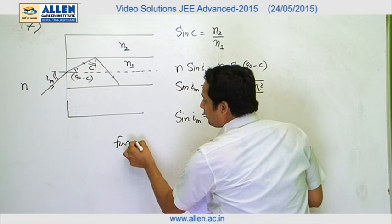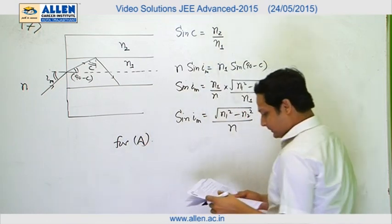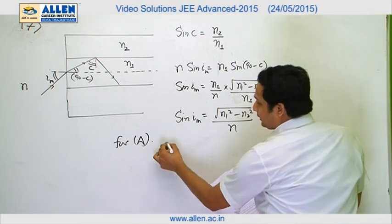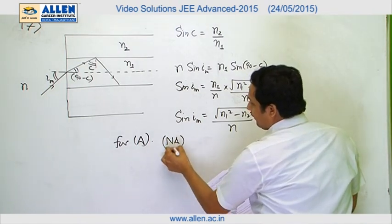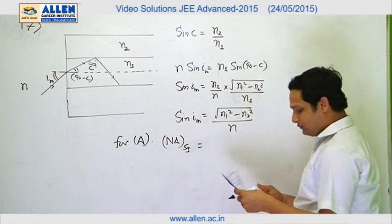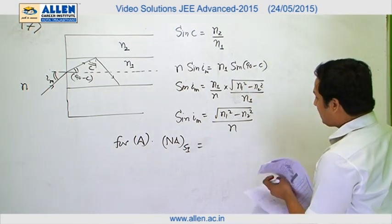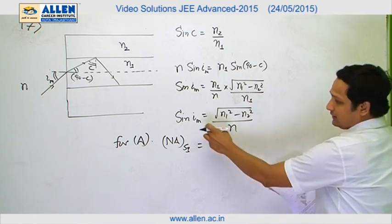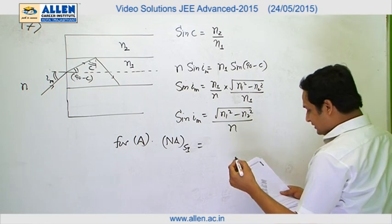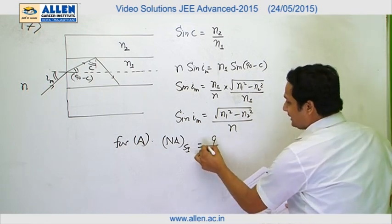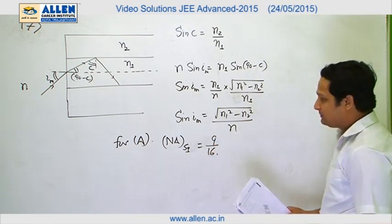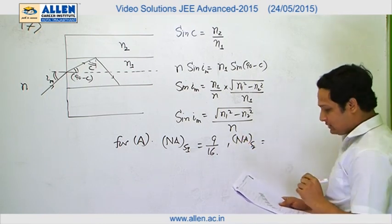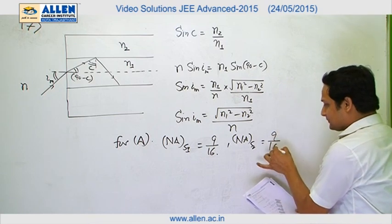For option A, we have NA of S1 immersed in water. NA of S1, if we calculate the value by putting the values of N1, N2, and N in this equation, NA for S1 comes out to be 9/16. Similarly, NA for S2, as given in the question, is also 9/16 for option A.